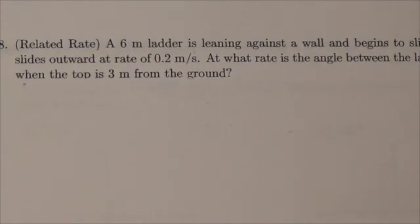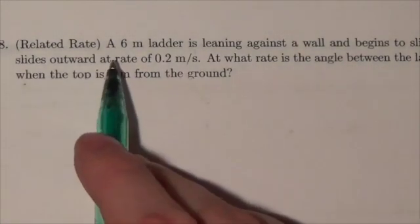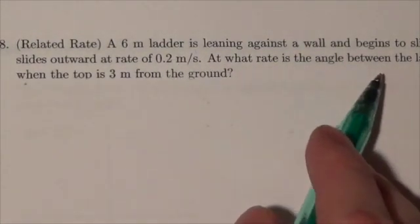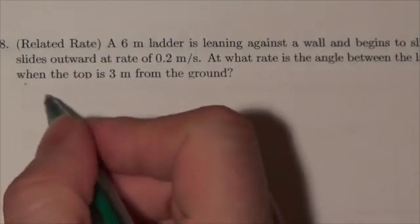Hi everybody, we're working through the Math 31 trigonometry review, and we're working through this related rate problem here. A 6 meter ladder is leaning against the wall and begins to slide. The foot of the ladder slides outward at a rate of 0.2 meters per second. At what rate is the angle between the ladder and the wall changing when the top is 3 meters from the ground?